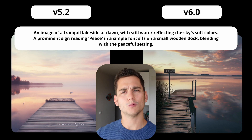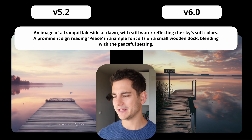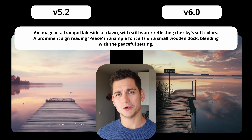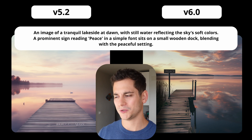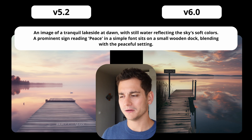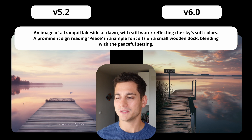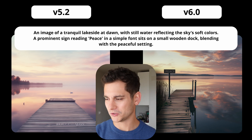Let's look at a simpler example — a peaceful lakeside at dawn with a small wooden dock and a sign saying 'peace.' Version 5.2 has some gibberish written on the dock itself, not on a sign as stated in the prompt — so not only did it get the text wrong, it also got the location wrong. Whereas in Midjourney 6.0, the detail on the water is much better with reflections of clouds above, and the text 'peace' is perfect and correctly placed on a sign rather than the dock itself.